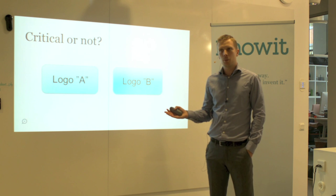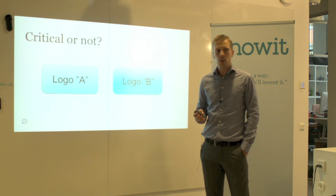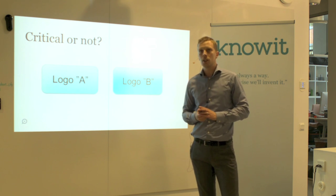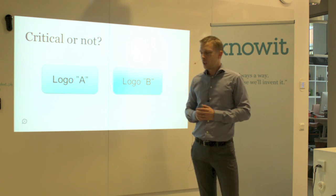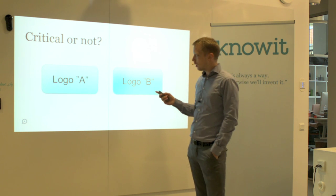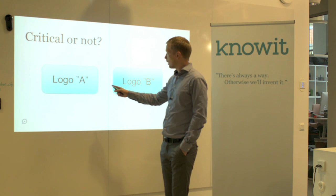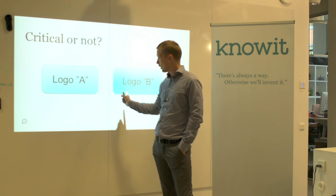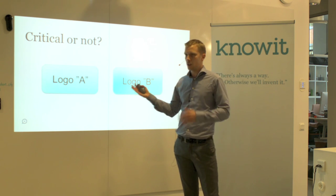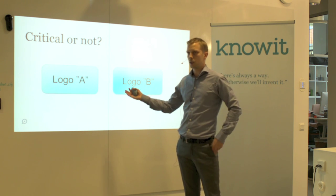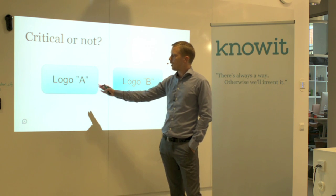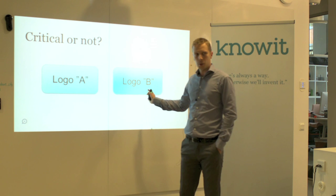It's about a tester who was working for a company — a big international company — releasing software going live all around the world. One of the testers found an issue, found a bug, where the first logo was the incorrect green color. It was the incorrect green-bluish color for the company logo of this system. The logo on the left, A, is the incorrect one, and logo B is the correct one.